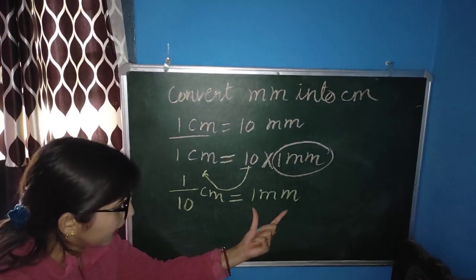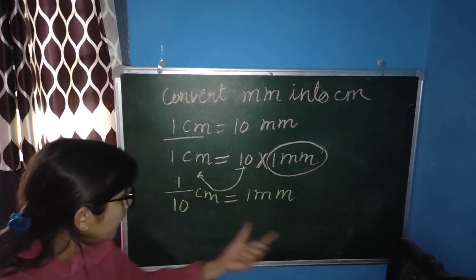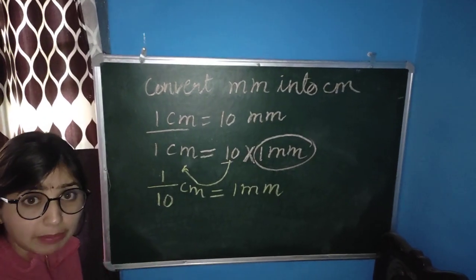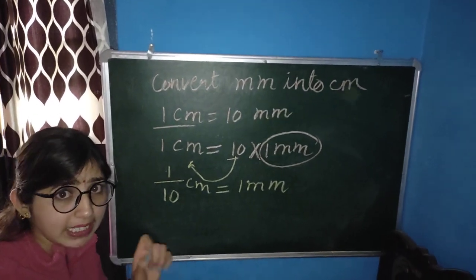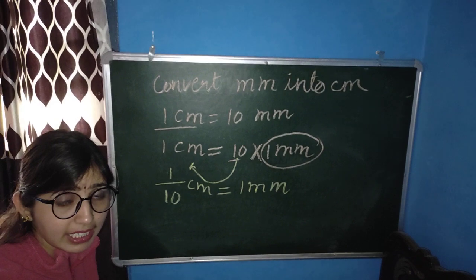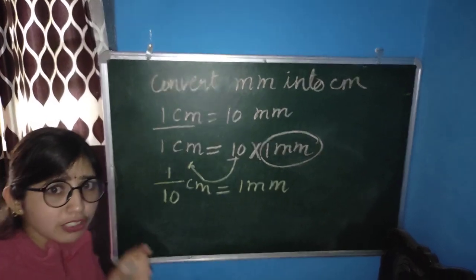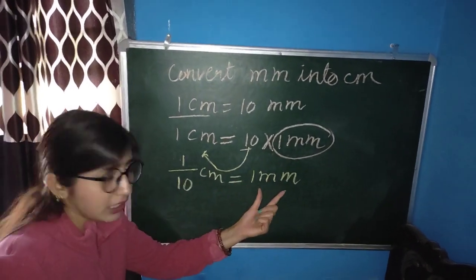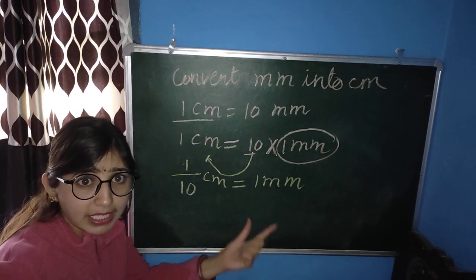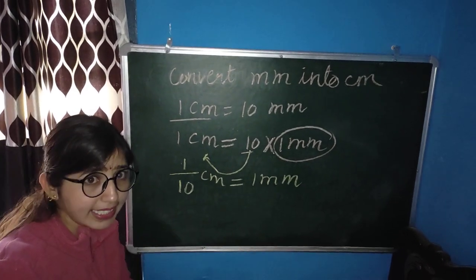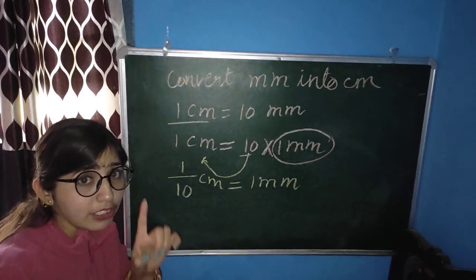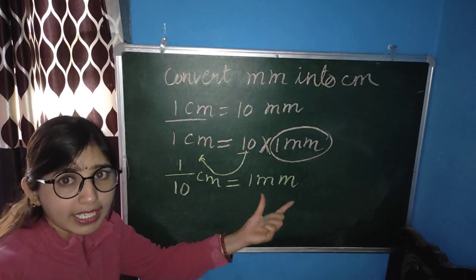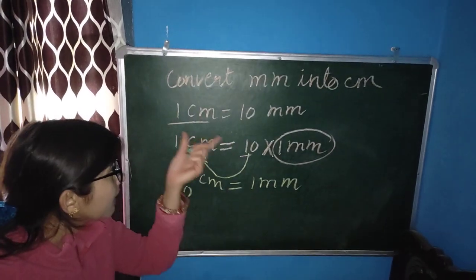We find out that 1 mm is equal to 1 by 10 cm. Just as we measured on our scale, we found that 1 cm has 10 small lines — meaning the mm is the 10th part of 1 cm.